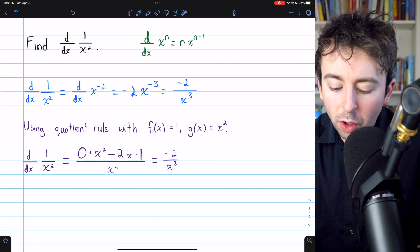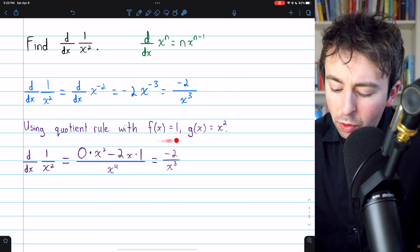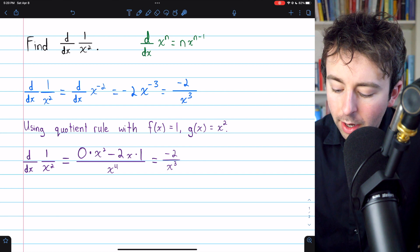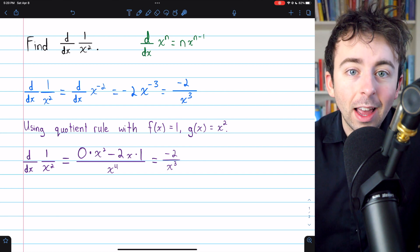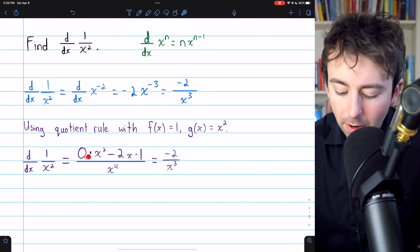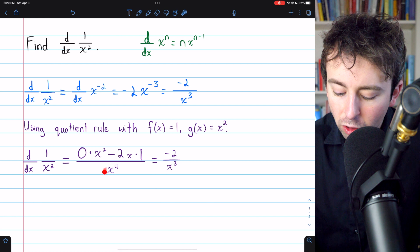Of course, the original function is 1 divided by x squared, so we could use the quotient rule with f of x equal to 1 and g of x equal to x squared. The quotient rule, then, is f prime g, which we see here, minus g prime f, all divided by g squared.